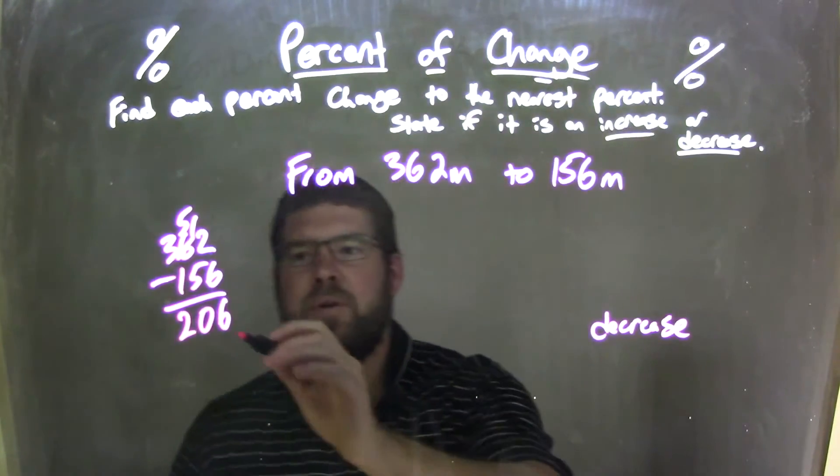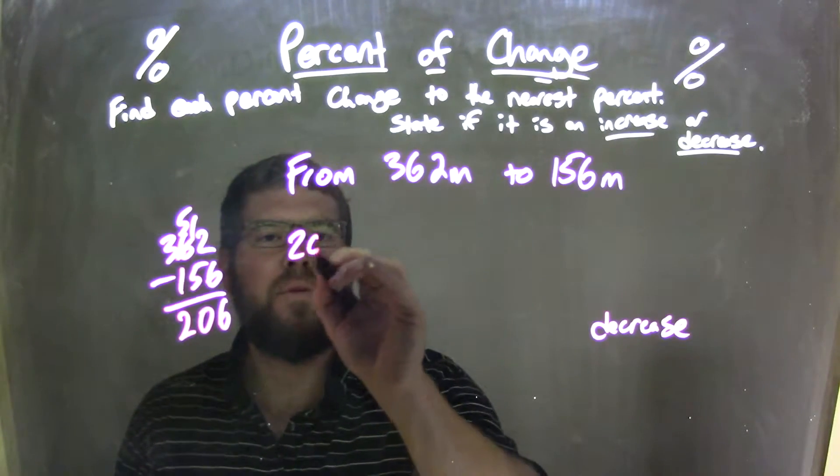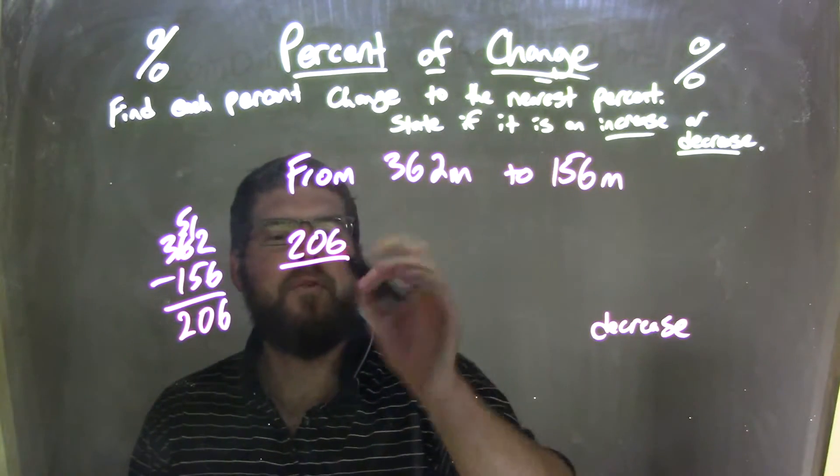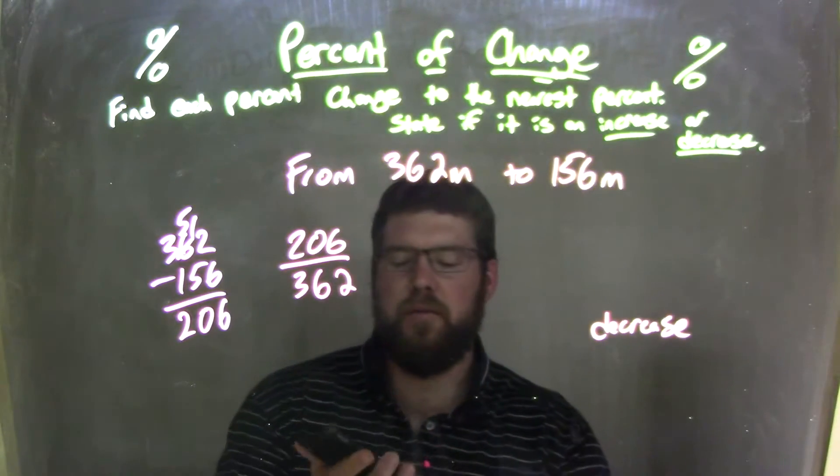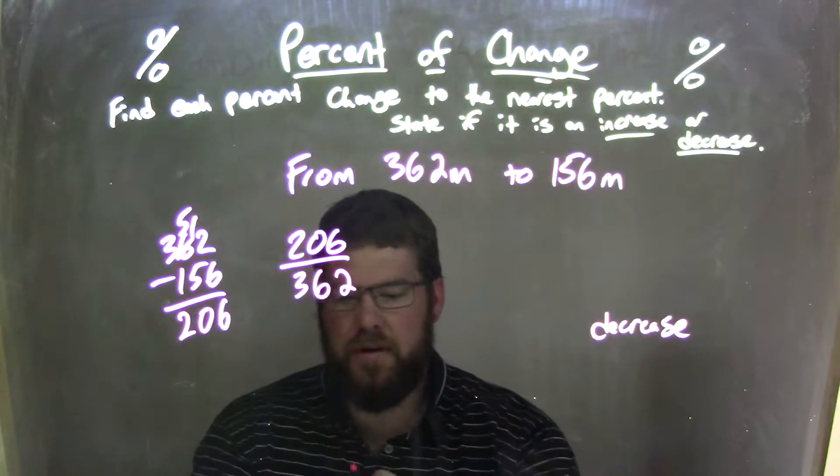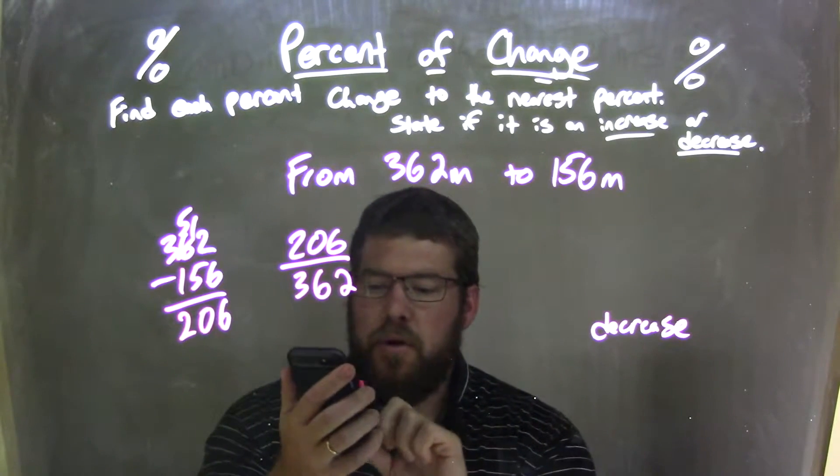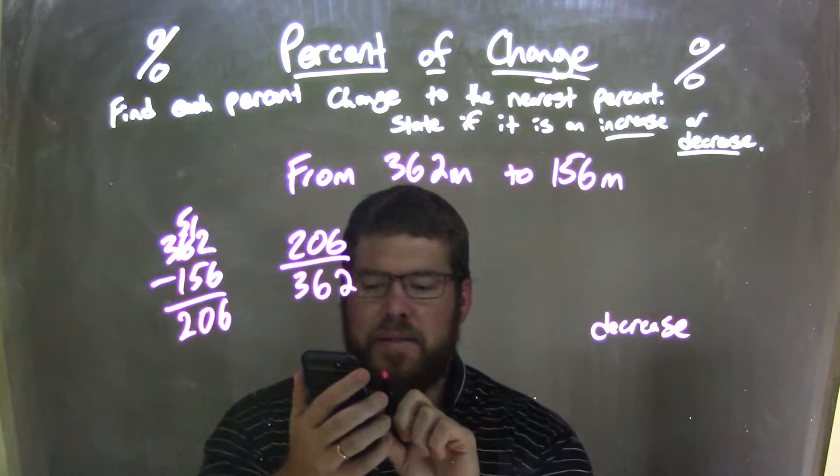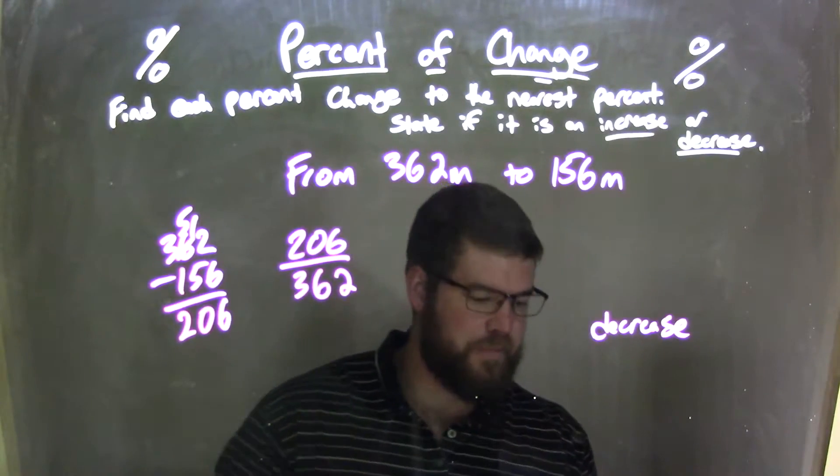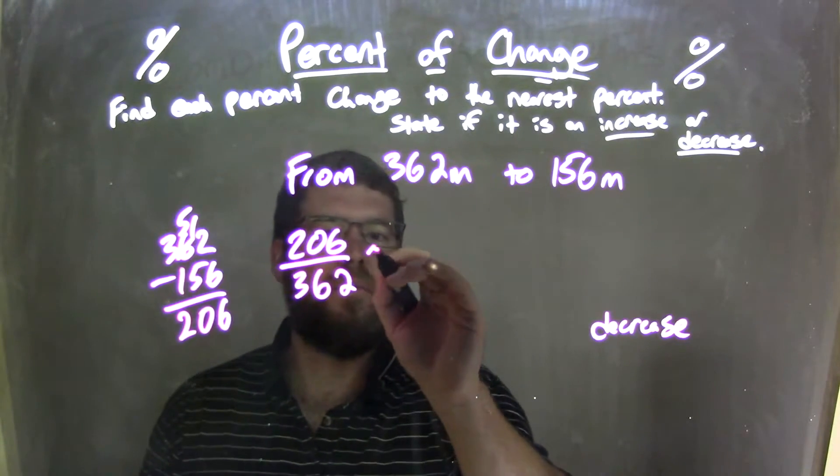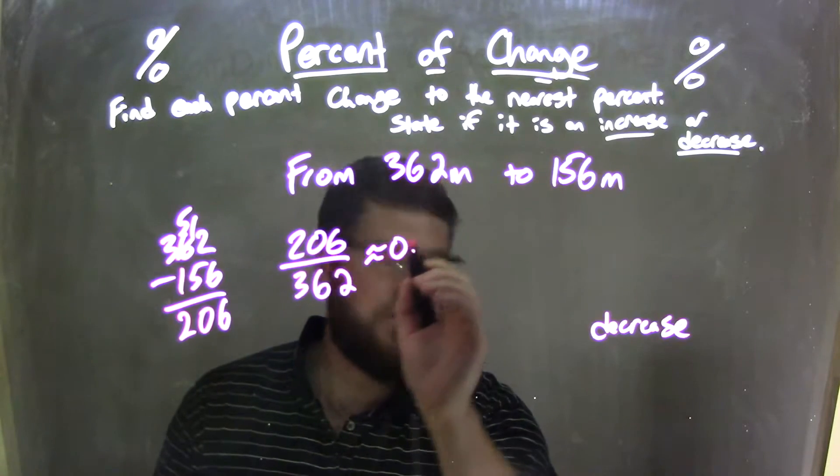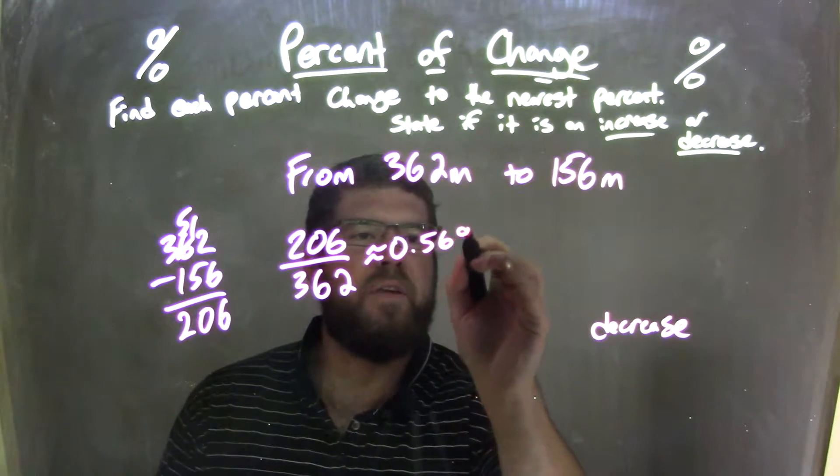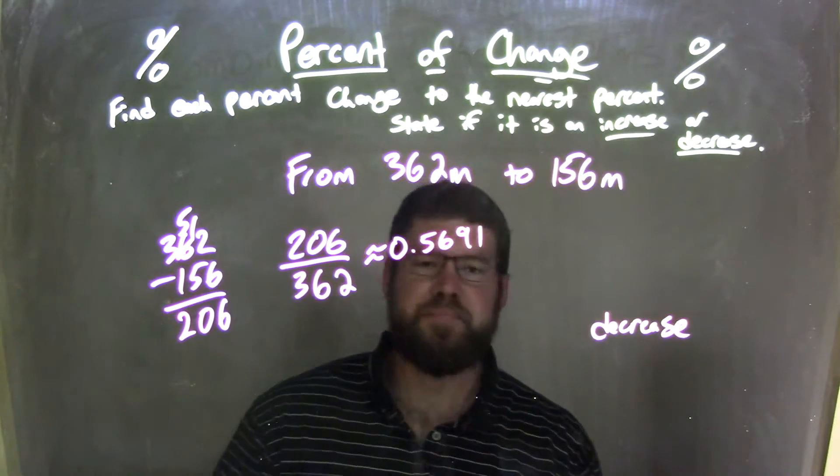So now we take this number, 206, and I'm going to divide it by my first number, which is 362. I'm going to use my calculator for this one. So I take my 206, divide it by 362, and I'm going to get a decimal. It is approximately 0.5691.